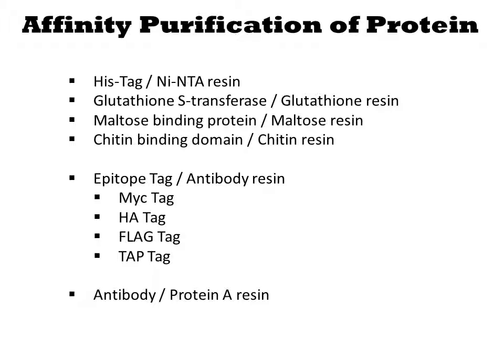Often, fusing these proteins to a protein you wish to purify will improve its solubility and expression. Additionally, there are a number of peptide tags that bind specifically to antibodies. Immobilizing the antibodies to a column or to magnetic beads provides another means of specifically isolating proteins from a complex mixture.